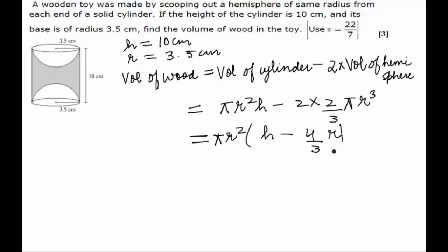When substituting the values of r and h, we get π into 3.5 squared times 10 minus 4/3 into 3.5. This gives us the final answer, which will be the solution to our problem.